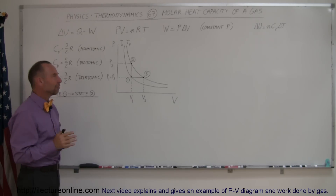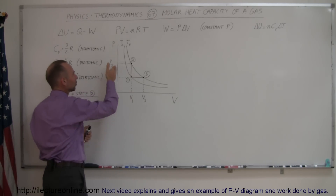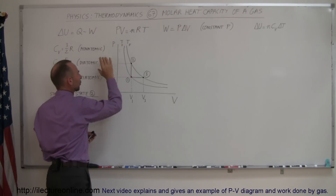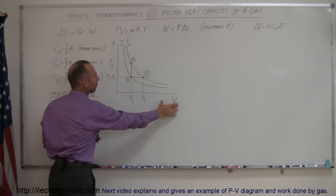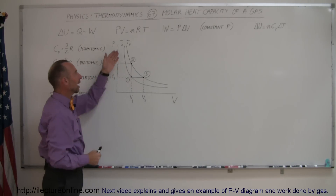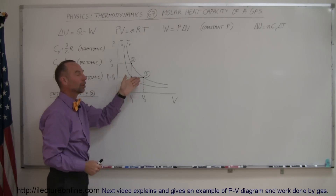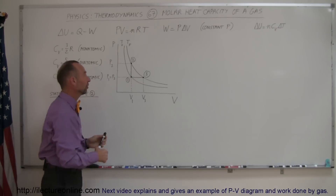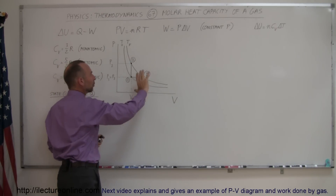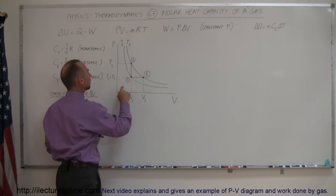Now we have in front of us a pressure-volume diagram, with pressure on the vertical axis and volume on the horizontal axis. There are two lines here, which are what we call isotherms — anywhere along these lines the temperatures are the same, and we'll talk about that in a little more detail later.